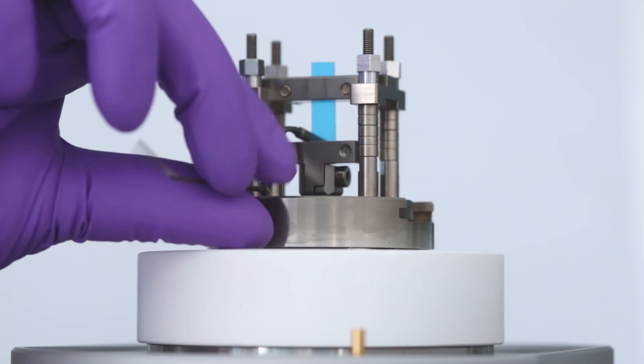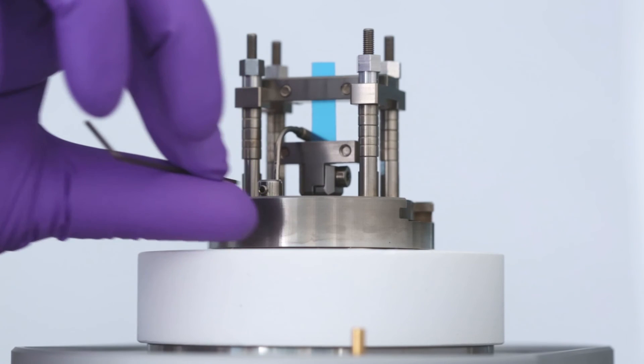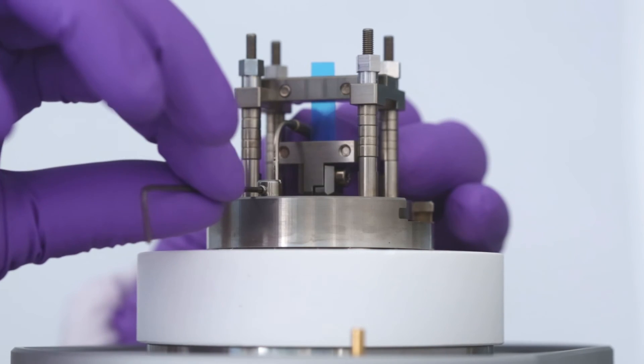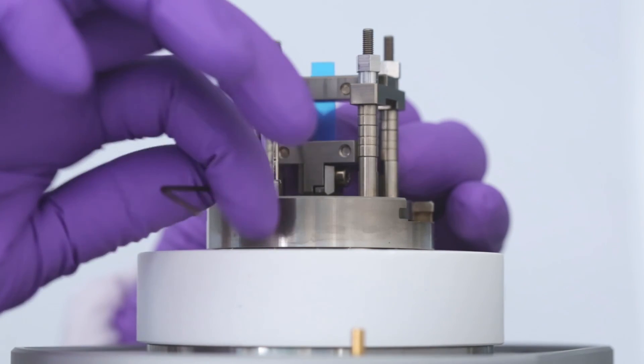Loosen the securing screw of the temperature sensor with a 1.27 mm Allen key. Position the temperature sensor as close as possible to the sample without touching it. Then, tighten the securing screw.